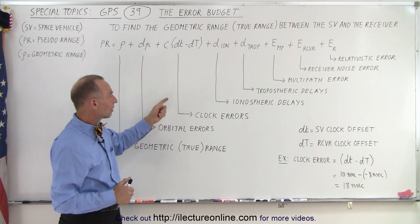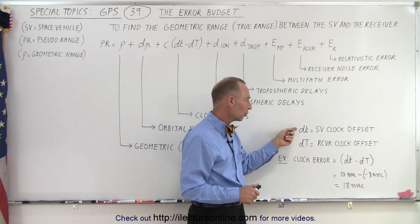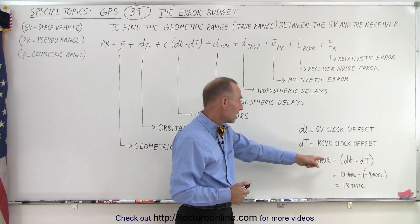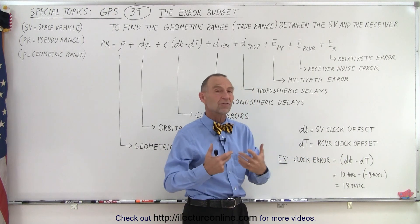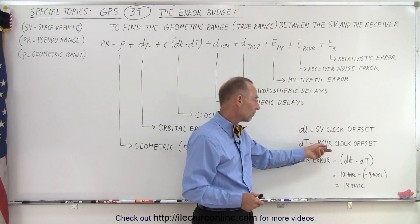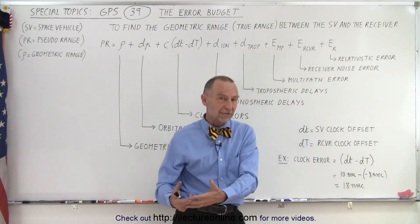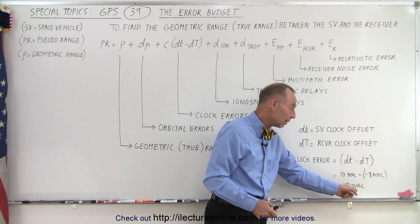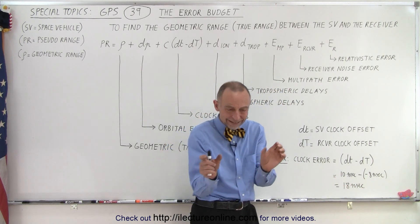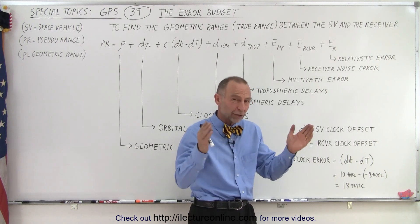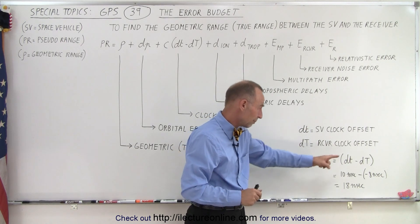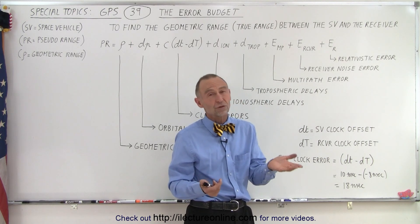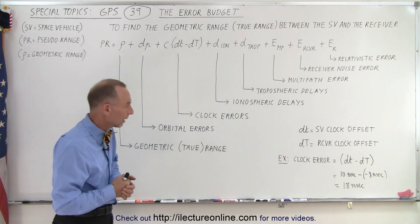When we take a look at these clock errors, notice that it's simply the difference between the SV clock offset and the receiver clock offset. Let's say that the SV clock offset is off by 10 nanoseconds in the positive direction, and the receiver clock offset is off by 8 nanoseconds in the negative direction. So one is ahead, the other one is behind. When we subtract one from the other, they become additive. If they both have an error in the same direction, then when you subtract one from the other, you get a smaller number. So it depends what the relative error is, if it's on the positive side or the negative side. Is the clock ahead or is the clock behind? We have to take that into account as well.